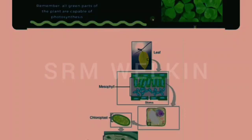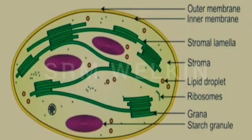You have learnt earlier about plastids, the double-membrane organelles found only in plant cells. Chloroplasts are the plastids that have chlorophyll and are vital for the manufacture of food. Each chloroplast consists of two parts: the grana, which are piles of flattened sac-like bodies, and the stroma, a liquid matrix. The flattened sac-like bodies are called thylakoids. The thylakoid membrane consists of protein complexes that have chlorophyll, and it is here that the photosynthetic reactions occur.